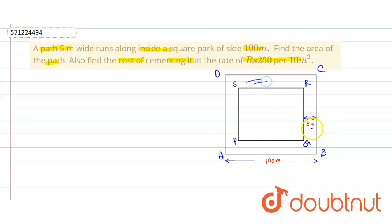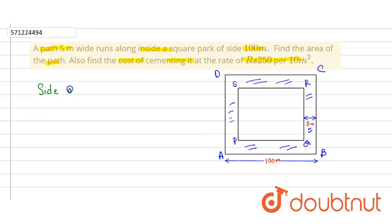Inside the park there is a path whose width is equal to 5 meters. We have to find first the area of this path section. To do that, we first find out the value of PQ, the side of the inside square. The side of the square park AB is equal to 100 meters.